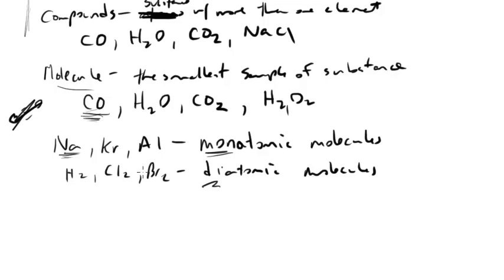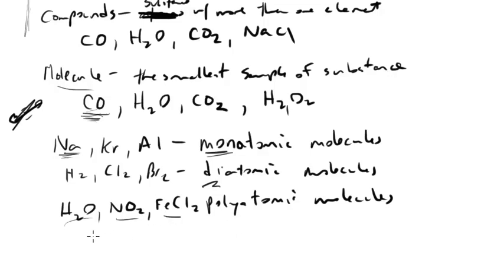And as you might expect, polyatomic molecules are more than two, generally three or more. So you have things like H2O, NO2, FeCl2, stuff like that. More than two atoms together, I should say. So you've got here three, you've got three here, you've got three here, and so on. So generally, more than three atoms together.